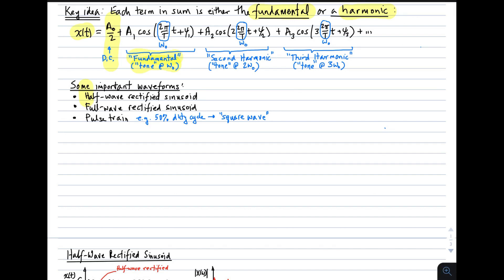The second term, n equals 2, is a tone or sinusoid at twice ω₀ or 2ω₀. And we refer to that as the second harmonic. The third term in the infinite series is a tone at a frequency three times ω₀. So we refer to that as the third harmonic.